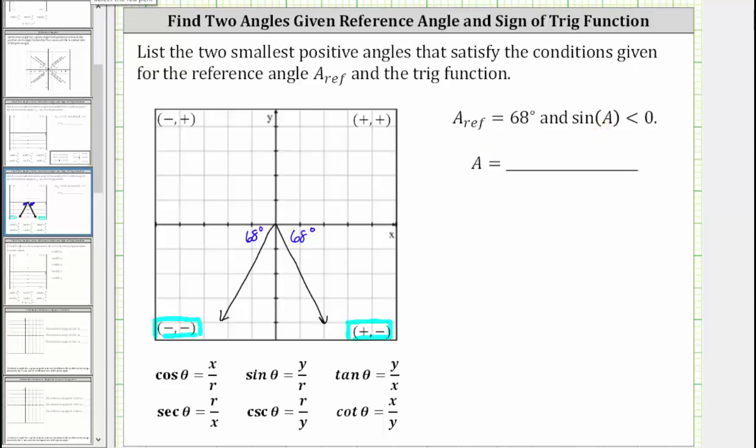So to find the smallest positive angle, we start along the positive x-axis and rotate counterclockwise to the terminal side in the third quadrant, which gives us this angle here.